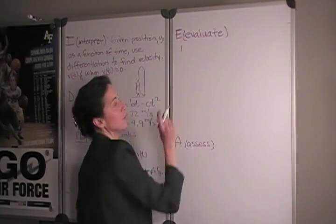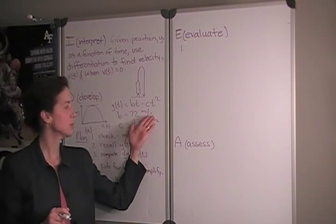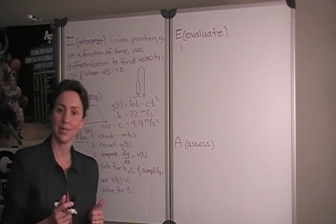So, as we evaluate this problem, first of all, let's check our units. b is given to us in meters per second, and c in meters per second squared. So, we're in mks units already.